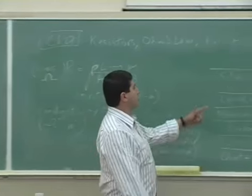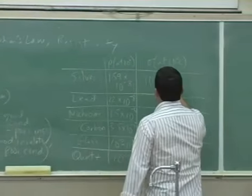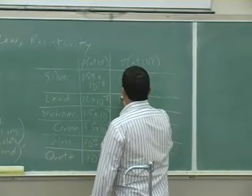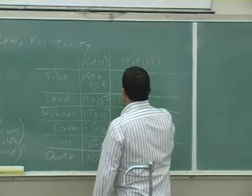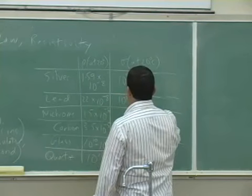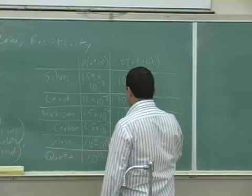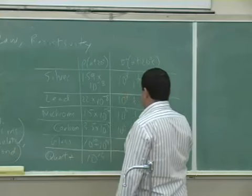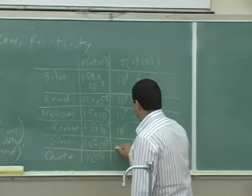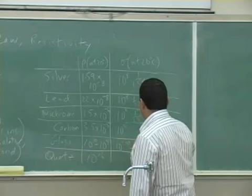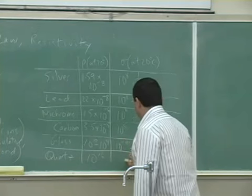Negative 1, meter negative 1. So sigma would be 10 to the 8th and then 1 over 1.59, and then this one it would be 10 to the 8th, 1 over 22, 10 to the 6th, 1 over 1.5, 10 to the 5th, and so on. And then this would be 10 to the negative 10th to 10 to the negative 14, and this would be 10 to the negative 60.